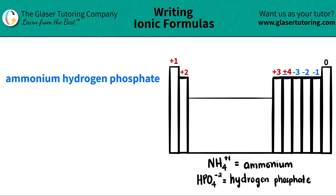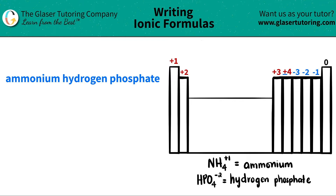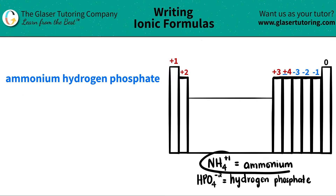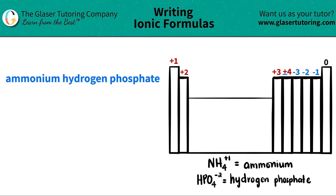Now I look at the first thing and I see I have ammonium. And if you scan the periodic table, you're never going to find the word ammonium, which means that this is actually a polyatomic ion, and polyatomic ions have to be memorized. So in this case, I have ammonium, and ammonium is always NH4 with the plus one charge.